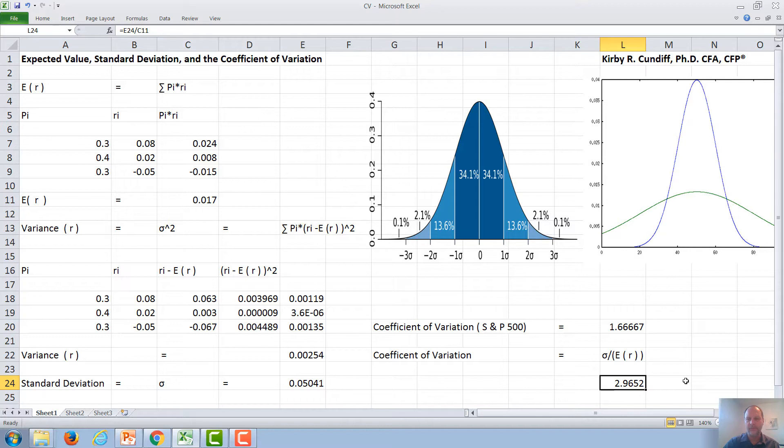Again, we could compare the coefficient of variation with this investment with the coefficient of variation of other investments, and ideally, we would prefer the one with the lowest coefficient of variation or the lowest risk per unit of rate of return. I thank you for watching this video.